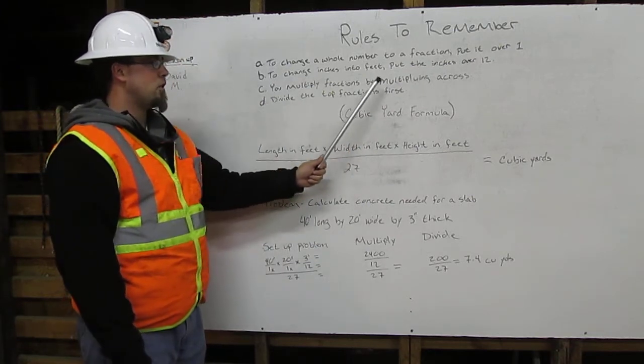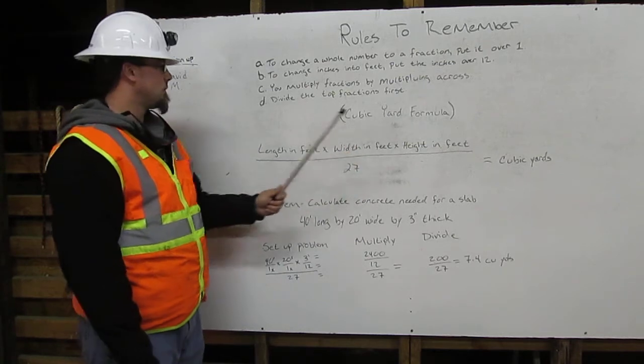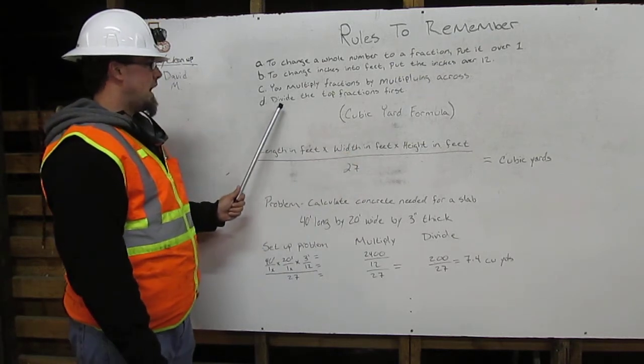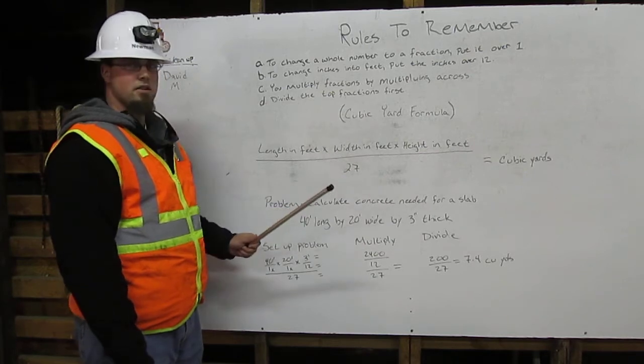you multiply fractions by multiplying across. Four, divide the top fraction first. Here is an example.